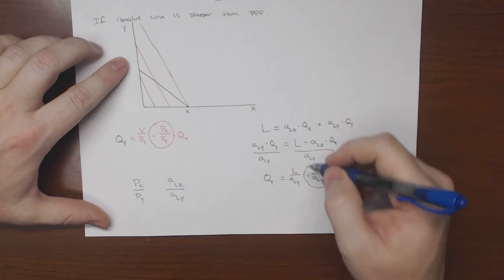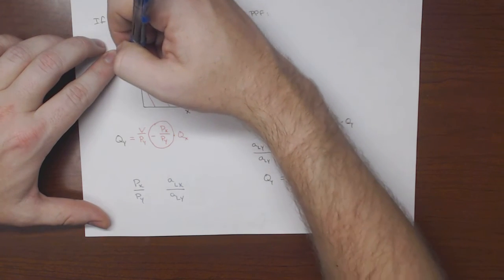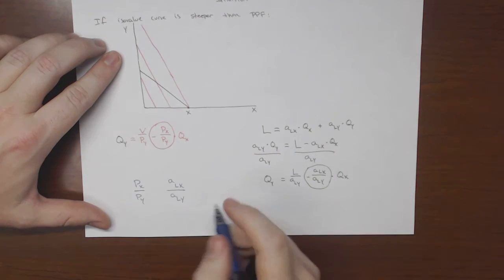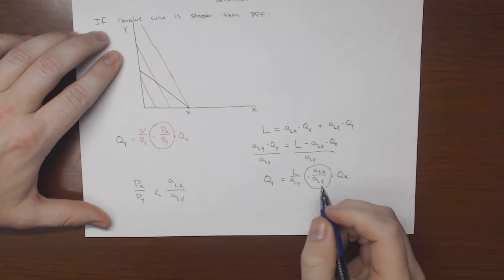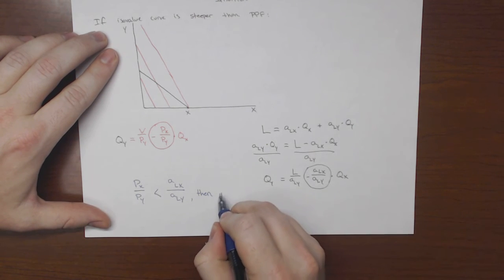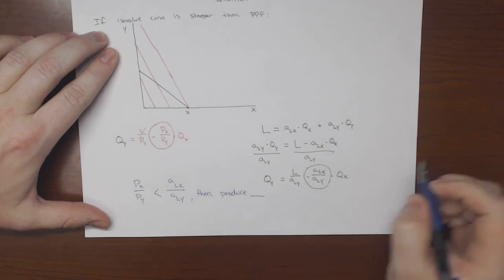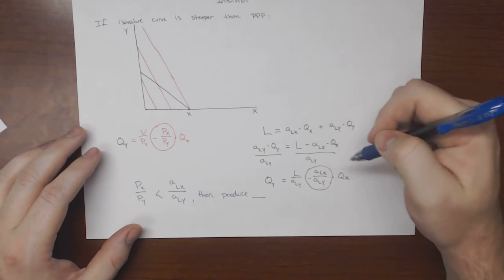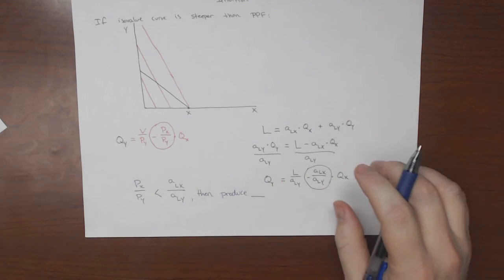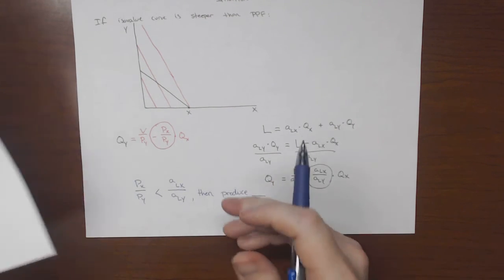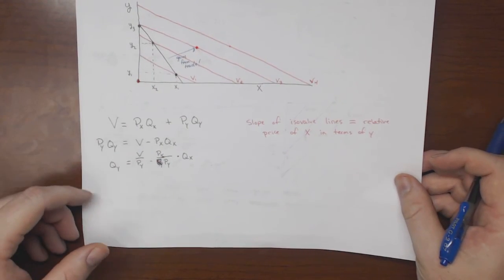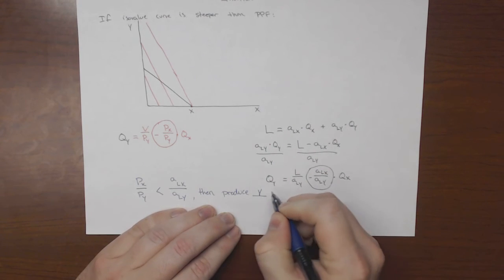So if the slope of this black line here is bigger or steeper than this one, then what should we do? We should produce what. So now we're saying that the ppf is steeper than the iso value curve, which means we're in a picture that looks like this. So this is steeper. So here we produce y.